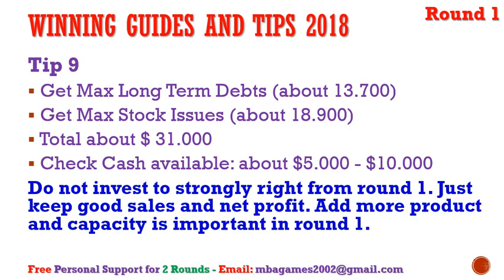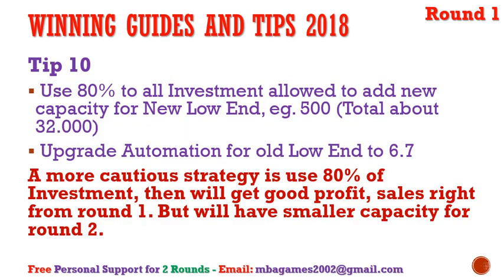From round two we can see competitors' strategies and adopt a more competitive approach. Do not invest too aggressively right from round one — keep good sales, good net profit, and most importantly add a new product and capacity so we go ahead of competitors by one round. Tip number ten: use only about 80% of investment, or 90% is okay.